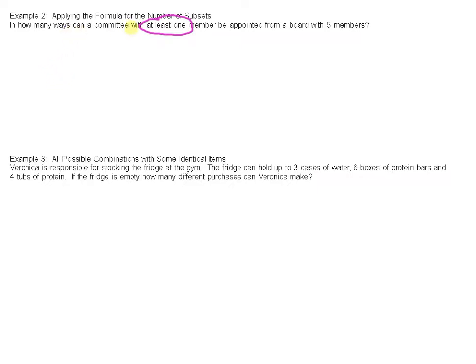So the committee can have at least one, because if there's zero members then there's no committee. So we're going to use two to the n minus one.